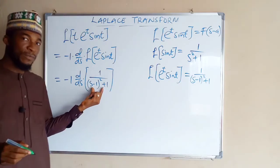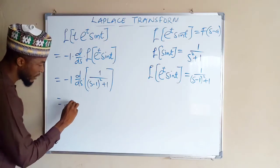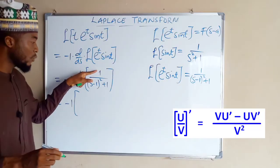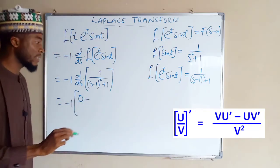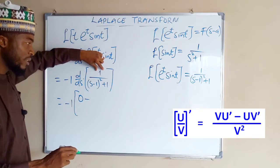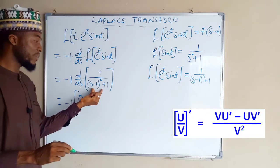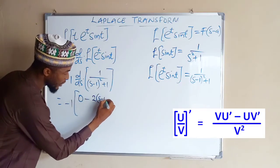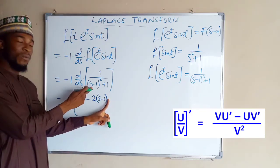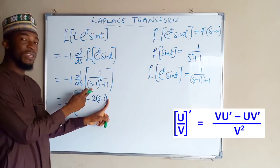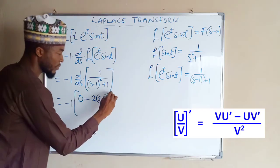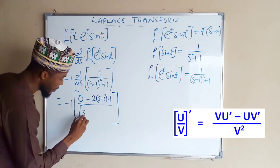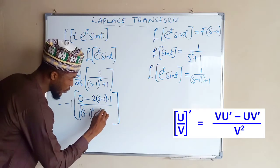So we are going to find the first derivative of this function using the quotient rule. This equals negative 1 times: the bottom times the derivative of the top — the derivative of the top is 0, making that term zero — minus the top, which is 1, times the derivative of the bottom. The derivative of the bottom: the 2 comes down to multiply by s minus 1, and then we multiply by the derivative of the inner function, which is 1.